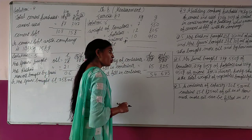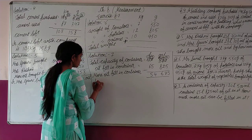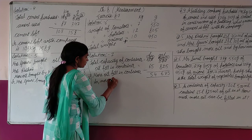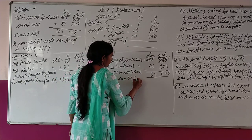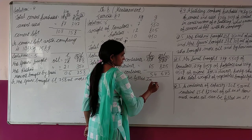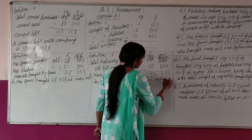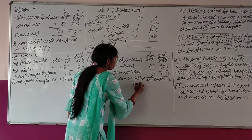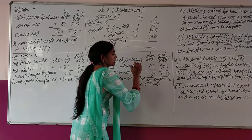What was to be found? How much more oil can be filled in the container. So more oil can be filled in container: 54 liter 675 milliliter.